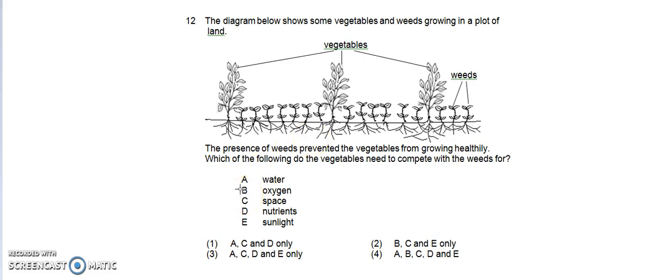B, Oxygen. Oxygen is not something that the plants or vegetables will compete with the weeds for, because they rather need carbon dioxide to make food.